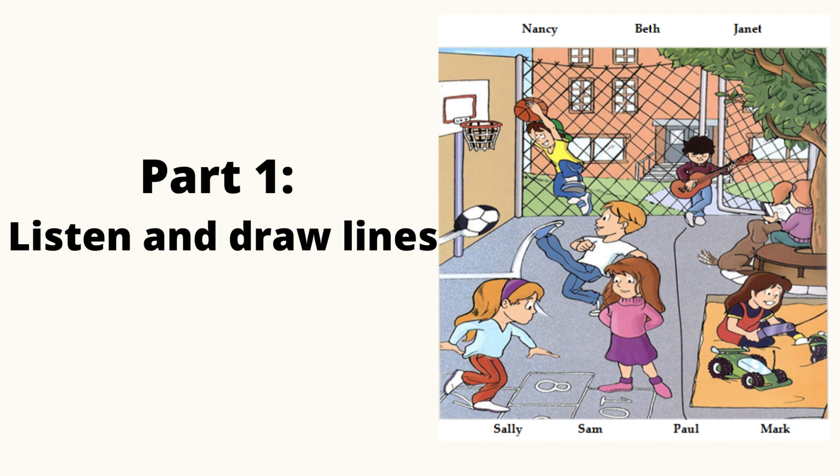3. Can you see Mark? No. What's he wearing? His blue jeans and a T-shirt. He loves jeans. Oh, yes. Is he wearing a yellow T-shirt? No. He's wearing a white T-shirt.